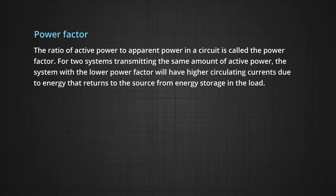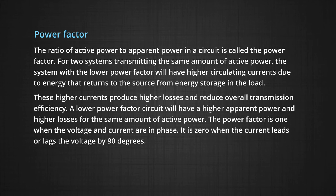Now we can discuss here about the power factor. The ratio of active power to apparent power in a circuit is called the power factor. That is for two systems transmitting the same amount of active power, the system with the lower power factor will have higher circulating currents due to the energy that returns to the source from the energy storage in the load. These higher currents produce higher losses and reduce overall transmission efficiency. A lower power factor circuit will have a higher apparent power and higher losses for the same amount of active power.